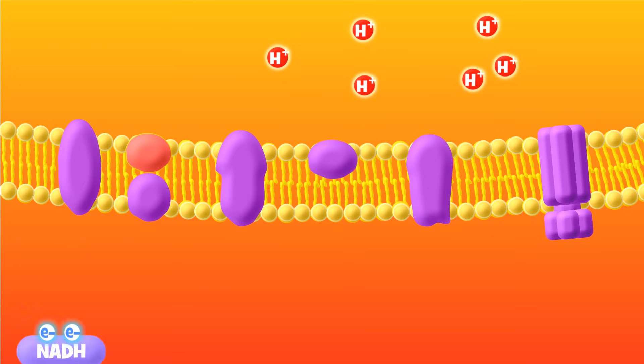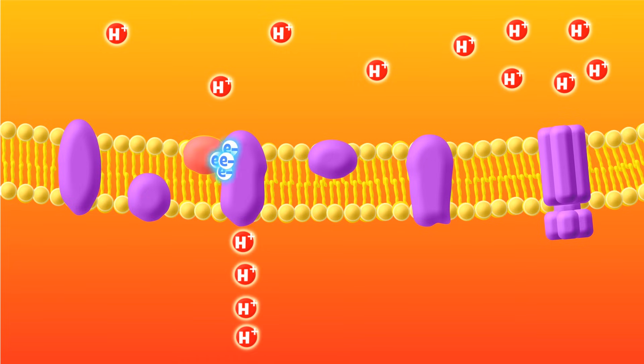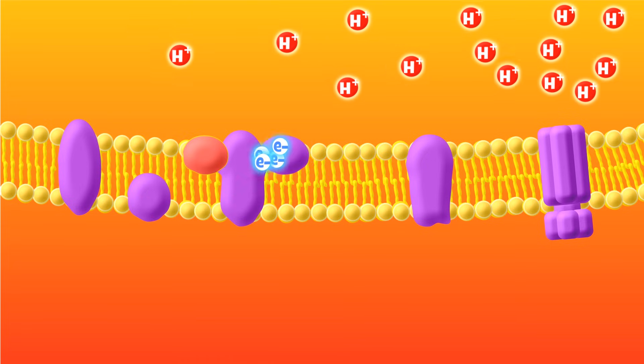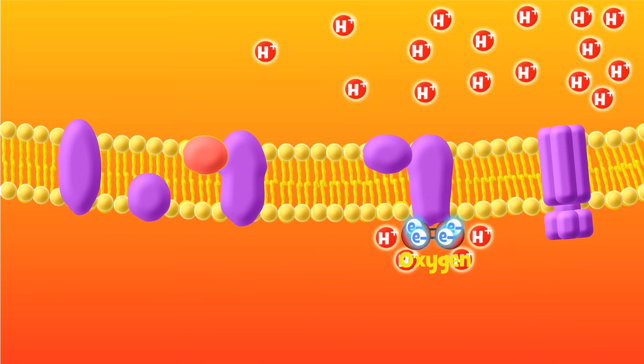Since we've made many electron carriers throughout respiration, the electron transport chain happens over and over again, making between 30 to 34 ATP molecules for every glucose that entered respiration.